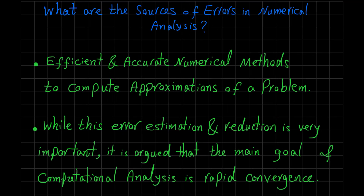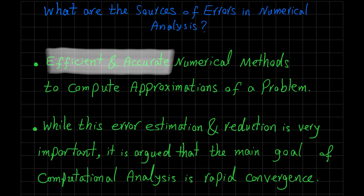So the question is: why do we use numerical analysis? The main purpose of numerical analysis, or computational analysis, or scientific computing — whatever you call it — is to develop efficient and accurate numerical methods to compute approximations to quantities that are difficult or impossible to obtain by analytic means. In other words, whenever you have a problem for which you cannot find a closed-form solution, then you have to try to obtain the solution of that problem by an appropriate numerical method.